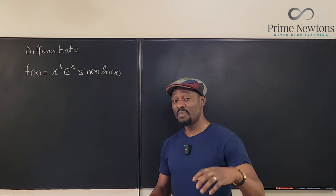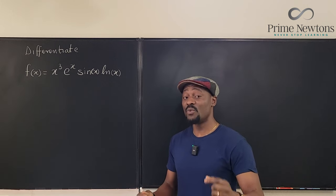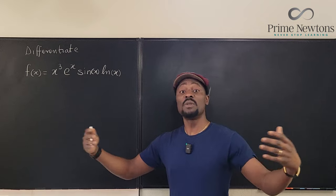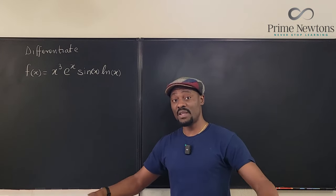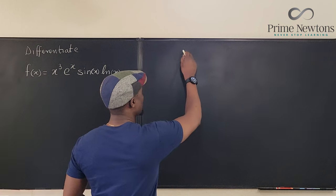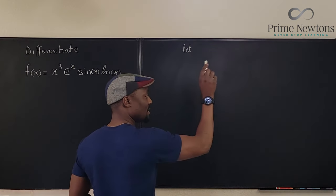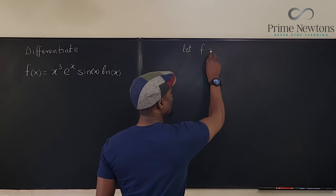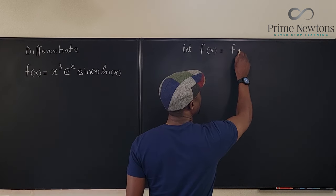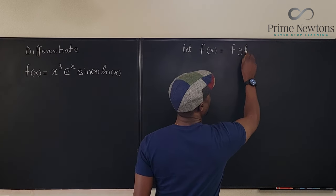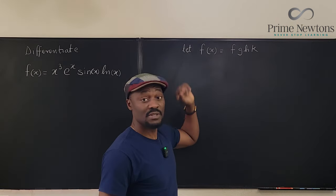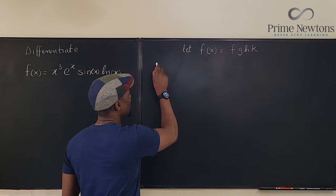What I'm going to do is make an attempt at establishing what you should do anytime you see the product of functions — if it is more than two or three or four, this is what we do. Let's have a function f of x, and let it be the product of f, g, h, and k. So we have four functions, and we want to take the derivative — we want to find f prime of x.